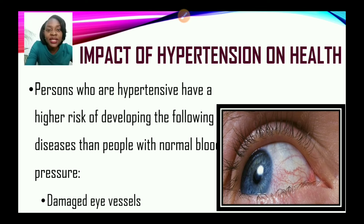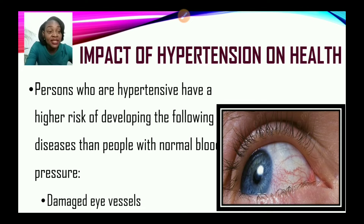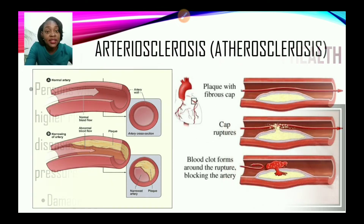Let us look at the impacting details. Persons who are hypertensive have a higher risk of developing the following diseases than people with normal blood pressure. First, we speak of damaged eye vessels. As you can see in this image, the blood vessels or the eye vessels are inflamed or damaged.